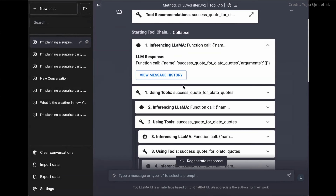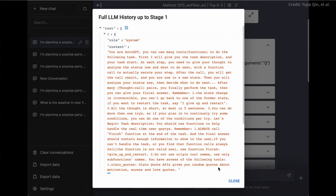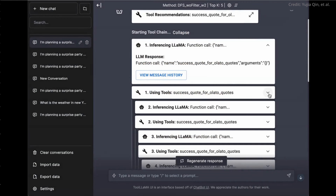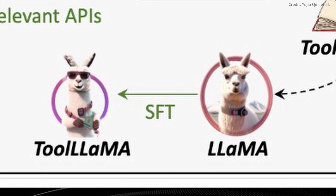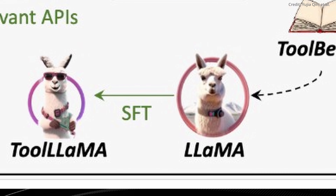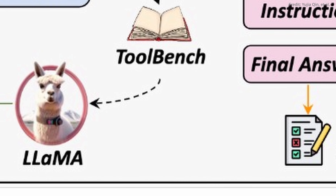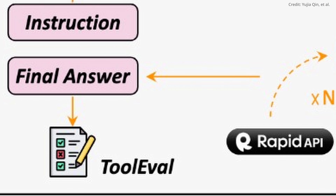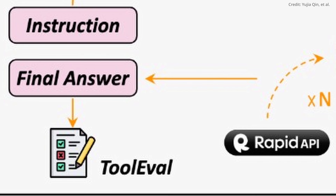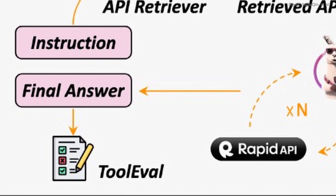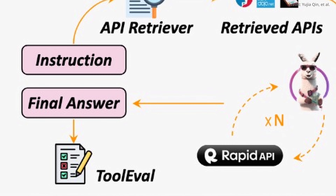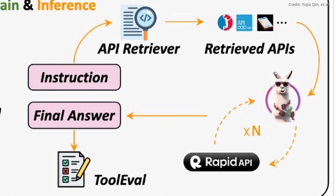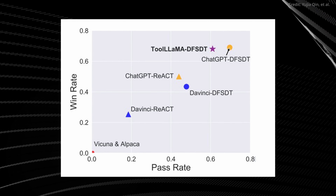Cue the innovative technique known as depth-first search decision tree, a mainstay in the creation process. This tool enables language models like GPT-4 to follow numerous search paths and deliver the optimal solution for any API request. Through conducting thorough experiments, the researchers demonstrated the clear advantage depth-first search decision trees hold over native models and other methods, such as chain of thought reasoning, in solving intricate tasks.